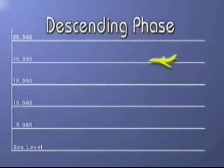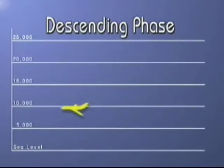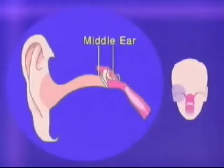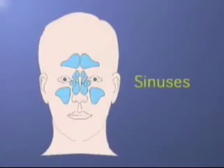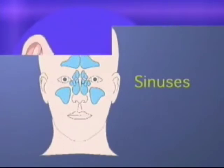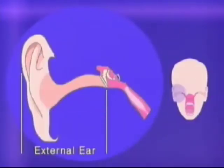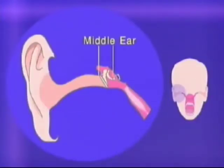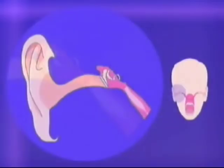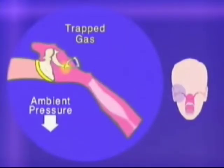During the descending phase of flight, you are more likely to develop problems in the middle ear and the sinuses. This illustration shows the anatomy of the ear. As pilots ascend, the ambient pressure decreases, expanding air within the middle ear.